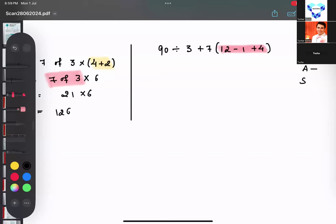DMAS is... addition is coming first and then division, so we'll add first in this bracket. So that means 12 plus 4, what is the answer? 12 plus 4 is 16.